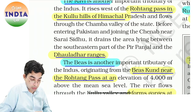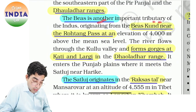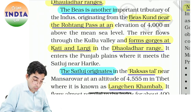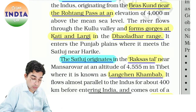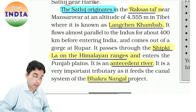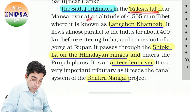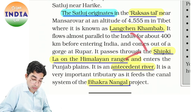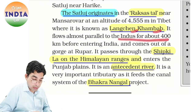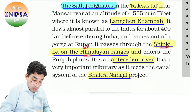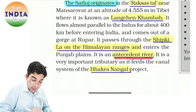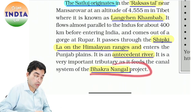Rohtang Pass — Kullu hills of Himachal Pradesh mein — Chamba valley mein aaye, Pakistan mein jaati hai, Chenab near Sarai Sindu. Pir Panjal aur Dhauladhar range ka area drain karti hai. Beas river is another important tributary of Indus — ye originate hoti hai Beas Kund near Rohtang Pass at 4,000 meters. River flow karti hai Kullu valley mein, gorge banati hai Kati aur Largi mein, Dhauladhar range mein drain karti hai aur phir ye meet karti hai Sutlej ko Harike pe — Harike Barrage banega. Sutlej near Harike. Sutlej kahan banti hai — ye aati hai Rakas Tal mein — Manasarovar lake ke paas.